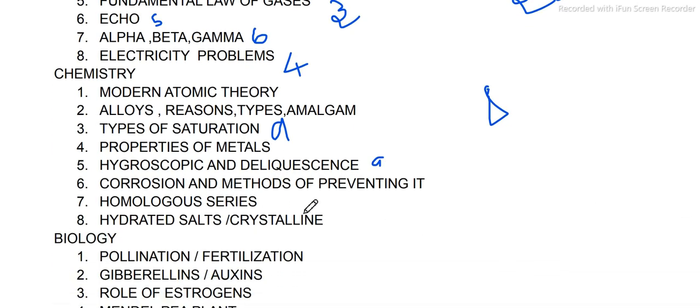Corrosion and methods of preventing it. Then homologous series, carbon and its compounds. Hydrated salts and crystalline salts from the 9th lesson. Solution lesson is easy — all the questions. Part 2-3 questions, detail 4-3 questions. High chances for these topics.